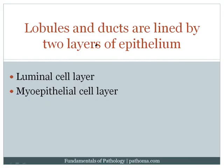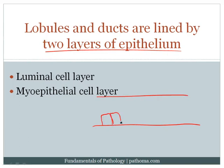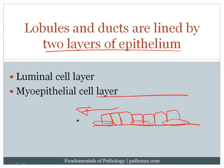A super high-yield point: all the ducts and lobules in the breast — essentially the entire breast epithelium — are lined by two layers of epithelium. The inner layer consists of luminal cells, which protect the duct and produce milk in the lobule. Underneath these luminal cells are myoepithelial cells — called 'myo' because they have contractile function, which helps squeeze the duct to push milk forward. So there is an inner luminal layer and an outer myoepithelial layer.